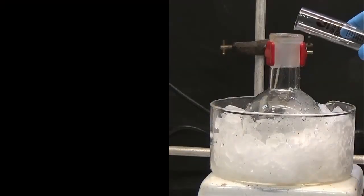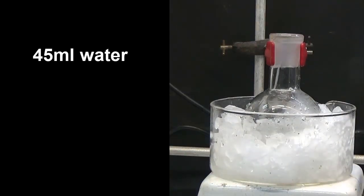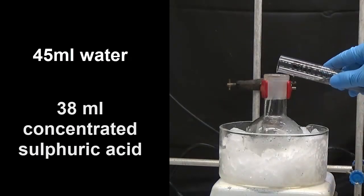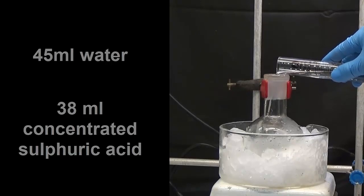In a 250 ml flask cooled with an ice bath, we place 45 ml of water. When it is very cold, add 38 ml concentrated sulfuric acid cautiously.